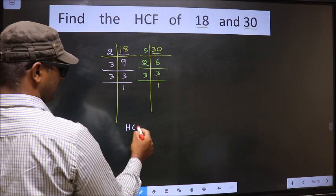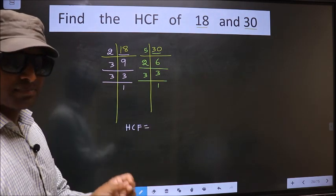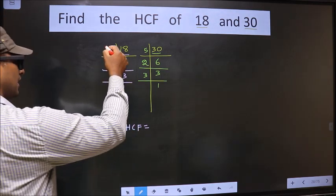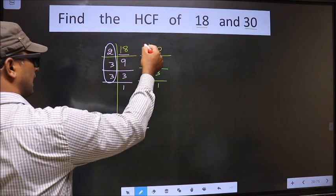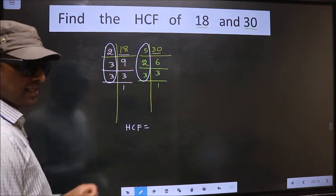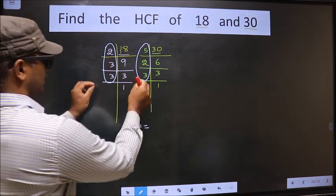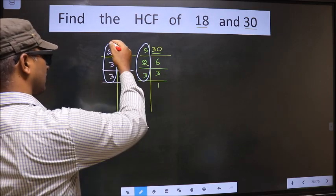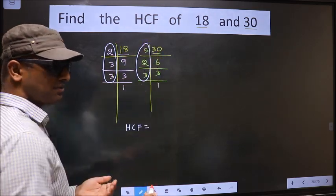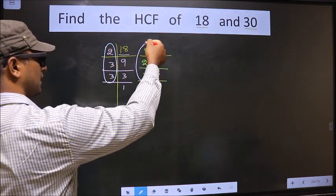So our HCF is... HCF is the product of numbers which should be present here and also here. I repeat, HCF is the product of numbers which should be present in these two places, here and also here. So now we should find the numbers which are present here and also here.